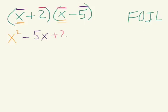2 times x is 2x. And finally I do the last. What color should I use? Red. So that would be 2 times negative 5 is negative 10. So you multiply these all out, and you end up with,